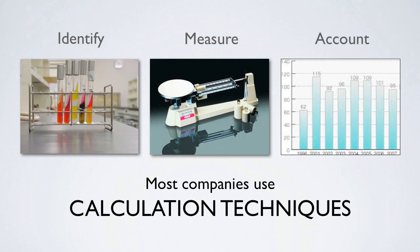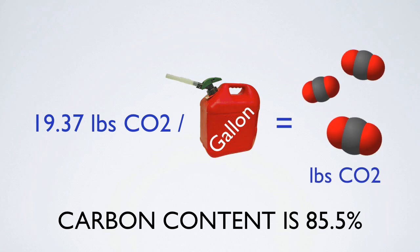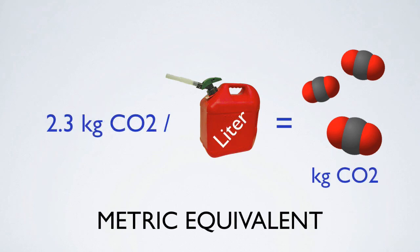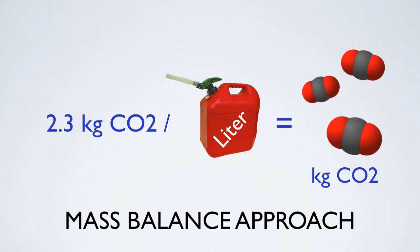Calculation techniques may still involve the use of scientific measurements, but not necessarily direct measurements of greenhouse gas emission rates. For example, in an earlier module we used the carbon content of gasoline to calculate the greenhouse gas emissions from its combustion. We know gasoline is 85.5% carbon, and combustion leads to 19.37 pounds of CO2 per gallon, or the equivalent of 2.3 kilograms of CO2 per liter. The emission factor is known — no need for direct measurements. This approach, often referred to as the mass balance approach, is used by many facilities under national and international reporting programs, both voluntary and mandatory.